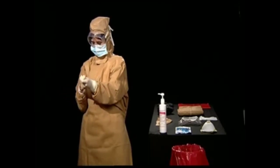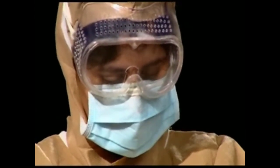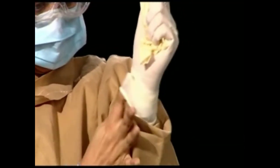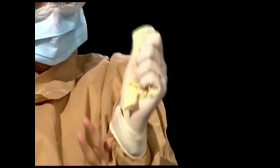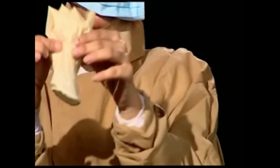Slide the index finger of the free hand underneath the second glove and roll it inside out over the already free glove. This way, the hands would not come in contact with the contaminated surface of the PPE. Once the gloves are off, they must immediately be thrown into the biohazard bag.